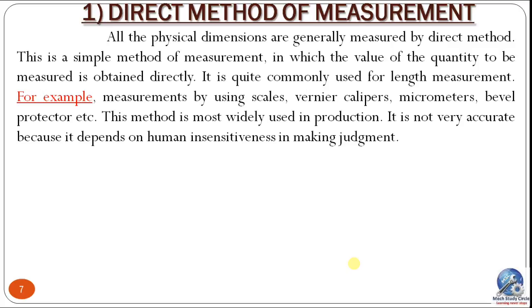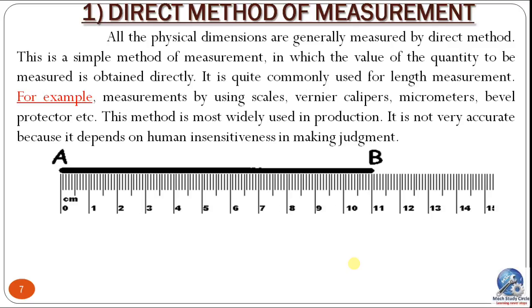The direct method of measurement: all physical dimensions are generally measured by this method. It is a simple method in which the value of the quantity to be measured is obtained directly, without any calculative part. It is quite commonly used for length measurement — for example, measurement using a scale, vernier caliper, micrometers, or bevel protractor. This method is most widely used in production, though it is not very accurate because it depends on human judgment.